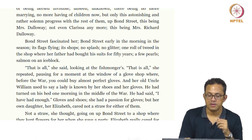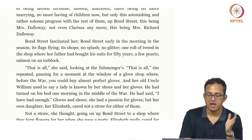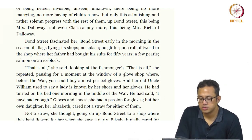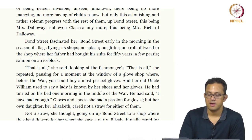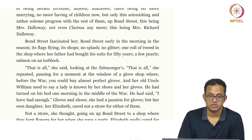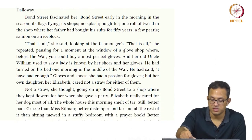Her old uncle William used to say that a lady is known by her shoes and her gloves. He had turned on his bed one morning in the middle of the war and said 'I have had enough.' She had a passion for gloves, but her own daughter Elizabeth could not care a straw for either of them. This dramatizes the generation gap — Elizabeth Dalloway, Clarissa's daughter, seems very different from her mother and does not care for the things that once fascinated her.